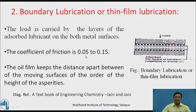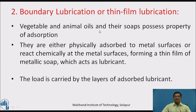The coefficient of friction in boundary lubrication is 0.05 to 0.15. This diagram explains the mechanism: two surfaces with a thin film of lubricant introduced between them to carry the load. The oil film keeps the moving surfaces apart at a distance of the order of the height of the asperities. Vegetable and animal oils and their soaps possess the property of adsorption — they are either physically adsorbed to the metal surfaces or react chemically at the metal surfaces, forming a thin film of metallic soap which acts as a lubricant.